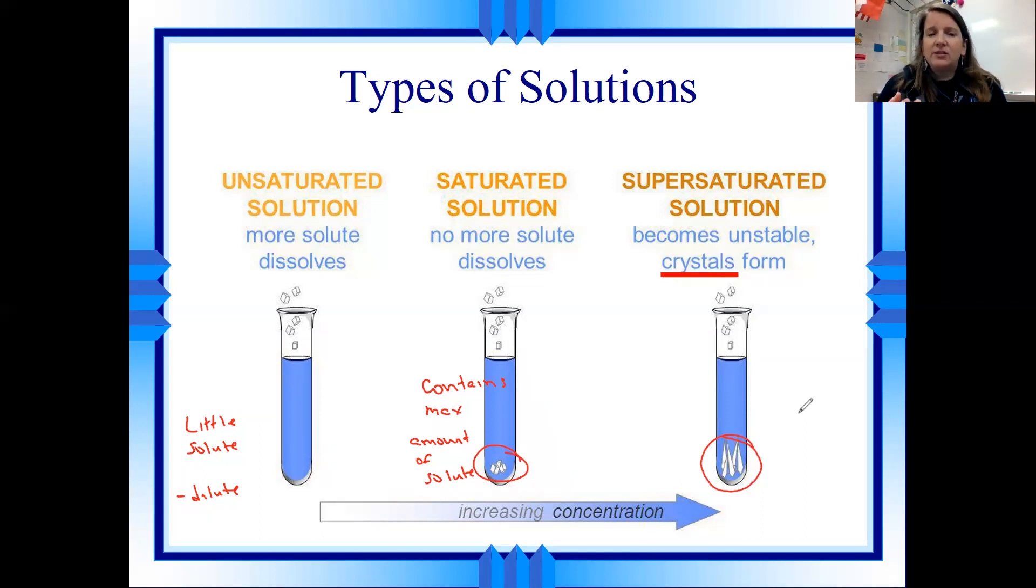Usually what happens is we dissolve a whole bunch of solute in the rock candy case. It's a sugar solution. But we dissolve a whole bunch of that solute at a really high temperature. And once the temperature starts to cool down, that solvent cannot hang on to the solute anymore. And the solute starts to crystallize out of the solution. That's usually how our supersaturated solutions are formed.